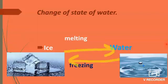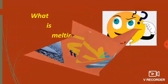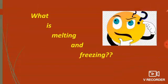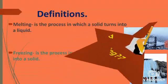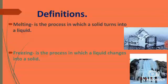Ice changes to water on melting and water changes to ice on freezing. Let us explore the terms melting and freezing. What are they? Melting is the process in which a solid turns into a liquid and freezing is the process in which a liquid changes into a solid.